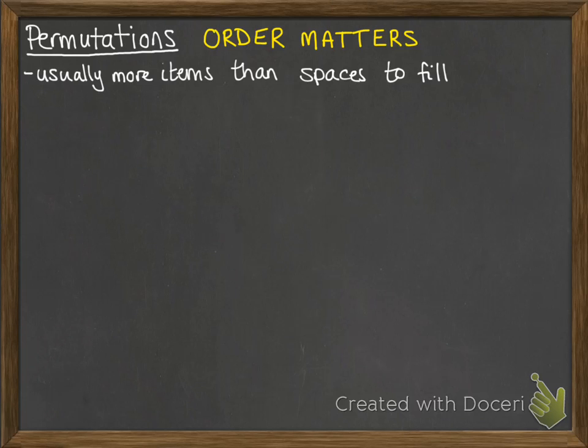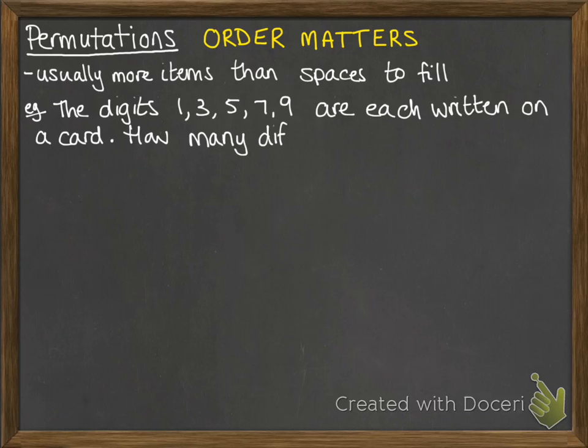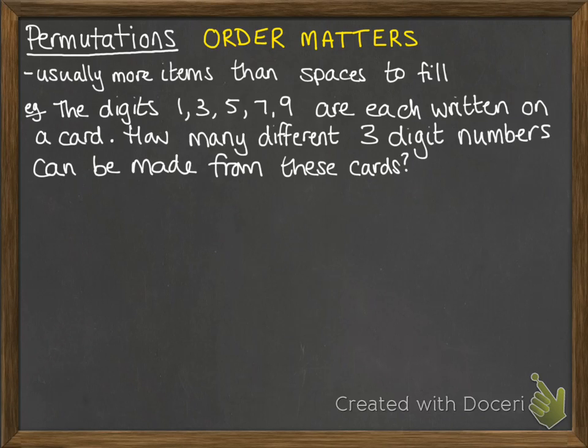Usually there'll be more items than we have spaces to fill. So there'll be more things we can choose from than we have places that we need to put things into. For example, we've got the digits 1, 3, 5, 7, 9 written on a card each. Three of those cards are going to be picked out and placed together to make a number. We want to find out how many different three-digit numbers could be made from these five that we've got to choose from.